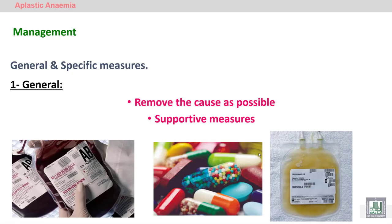How to treat aplastic anemia — general supportive measures. Because of a decrease in red blood cells, we have to give the patient red blood cell transfusion. Because of a decrease in platelets, we have to give the patient platelet transfusion. Because of a decrease in white blood cells, we have to give the patient antibiotics in order to treat or prevent infections.